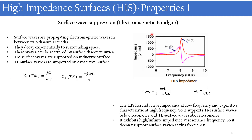Now considering our high impedance surfaces: the equivalent circuit is a parallel combination of L and C, with total impedance Z(ω) = jωL / (1 − ω²LC). At the lowest frequency, this impedance is inductive, so high impedance surfaces will support TM surface waves at lower frequencies.